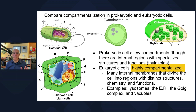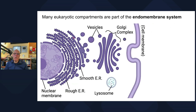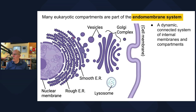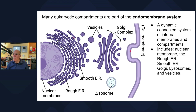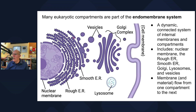Many eukaryotic compartments are part of the endomembrane system — a dynamic system of internal membranes and compartments. The nuclear membrane is contiguous with the rough ER, which is contiguous with the smooth ER. The smooth ER buds off vesicles that go to the Golgi. The Golgi buds off vesicles that go to lysosomes and to the membrane. Phospholipids are moving between these various parts — it's a very dynamic system with membrane and materials flowing from one compartment to the next.